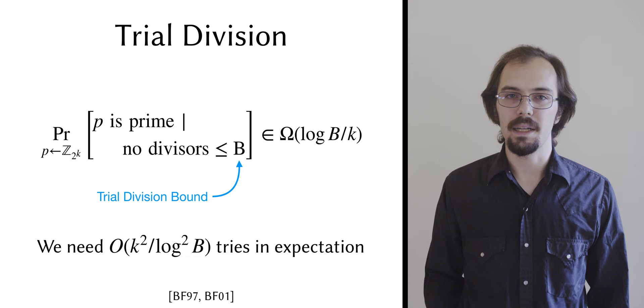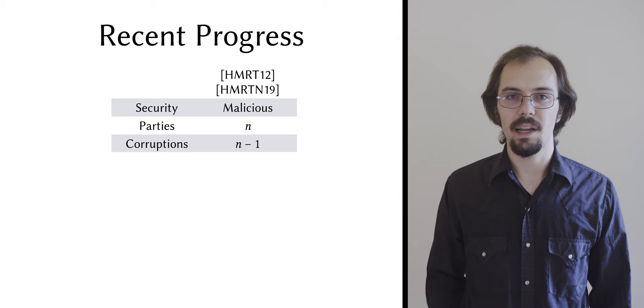Now, as I said, I'm going to skip forward a bit. Fifteen years later, the HMRT protocol was the first to support an arbitrary number of parties and achieve malicious security against a dishonest majority.